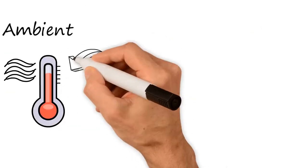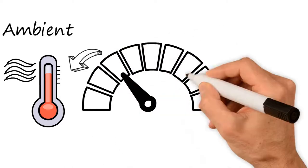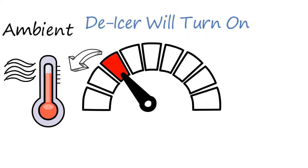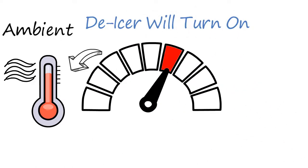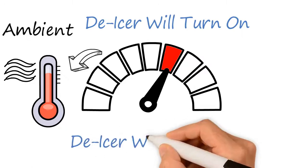When ambient air temperature falls to the desired setpoint, the de-icer will turn on. When temperatures rise above the desired setpoint by 3 degrees, the de-icer will turn off.